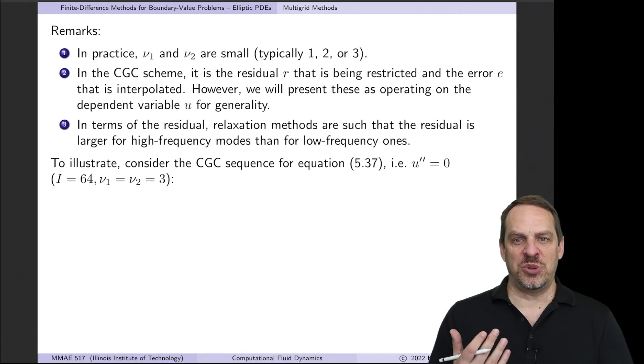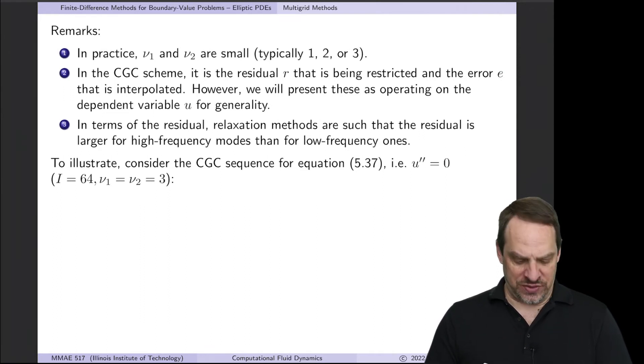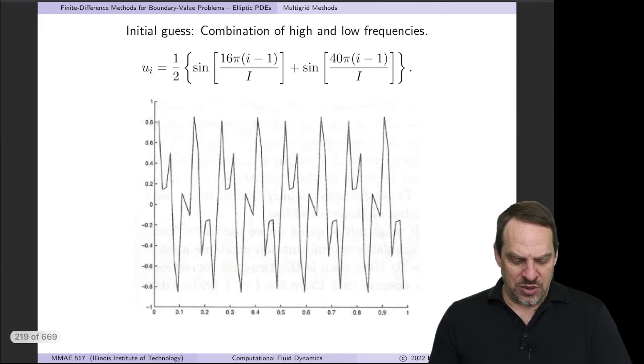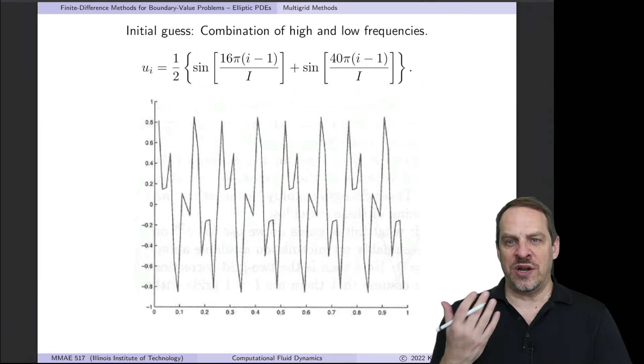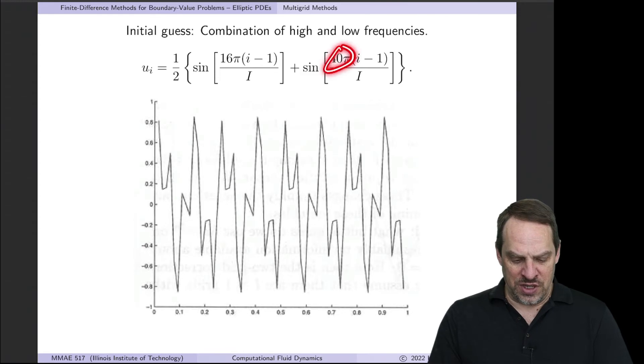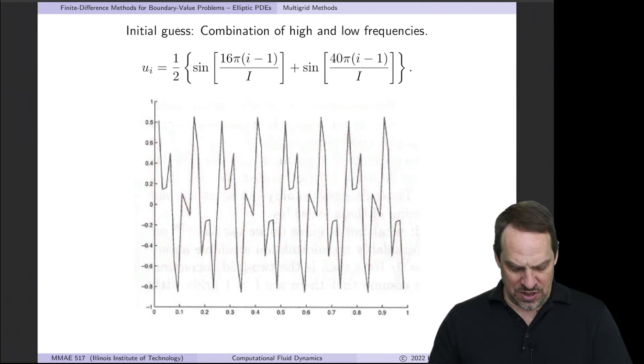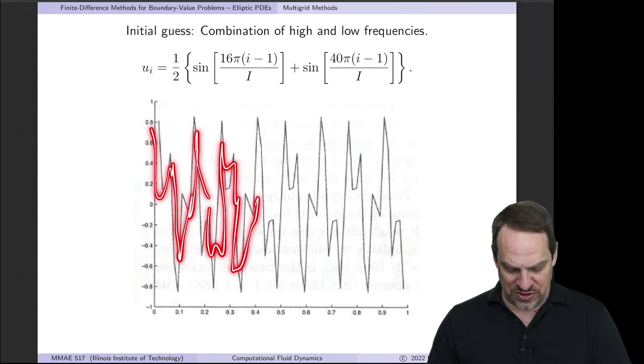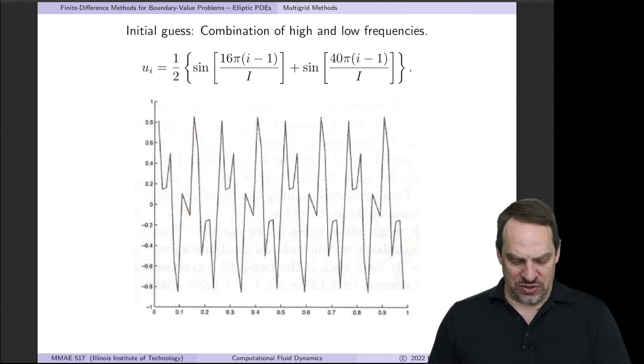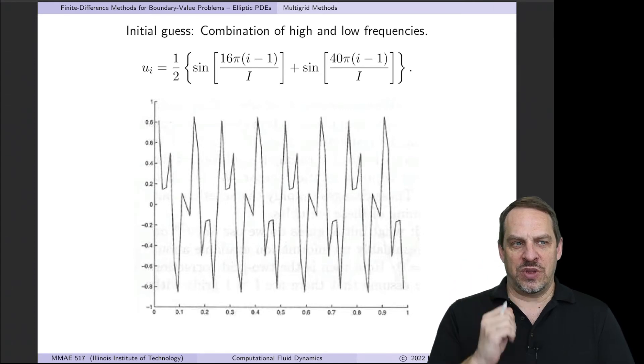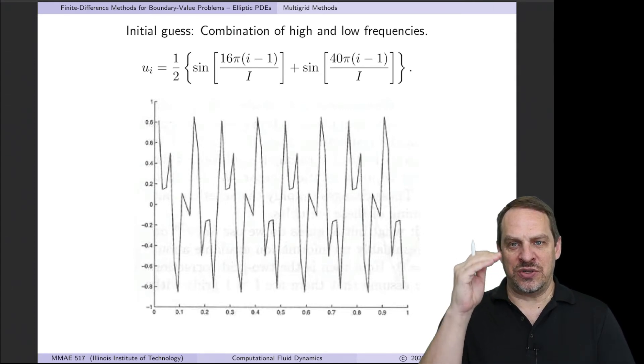Now we're going to return to this simple one-dimensional example that we considered in the previous video to motivate these multi-grid methods. u''=0 with homogeneous Dirichlet boundary conditions at both ends. And I'm going to choose the ν_1 and ν_2 to be three here just for the sake of illustration. My initial guess is going to involve two modes, k=16 and k=40. So a higher frequency mode with 40 and a lower frequency mode with 16. So you see that here.